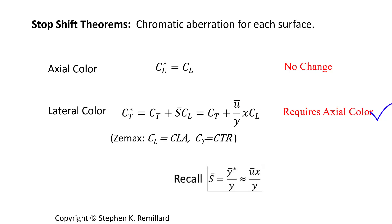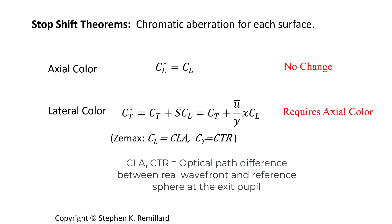For those who use Zemax, these coefficients — C_L for axial color and C_T for lateral color — are CLA in Zemax for axial color and CTR for lateral color. Using a subscript L can be a little confusing for axial color; the L is for longitudinal. You have to not confuse C_L with lateral color — it's longitudinal or axial color.